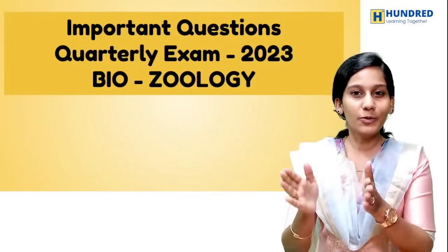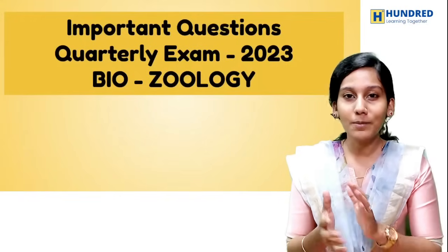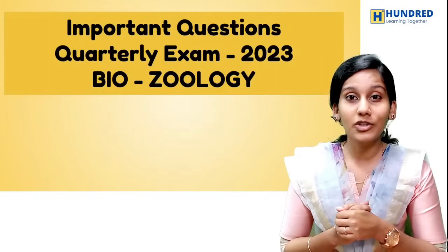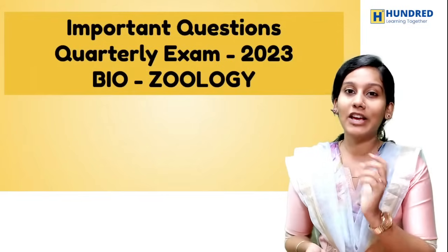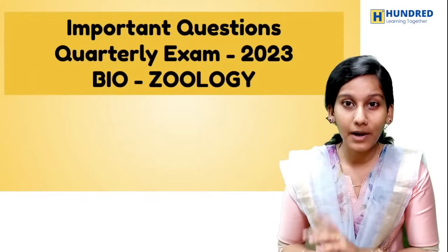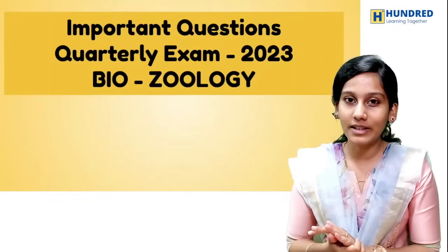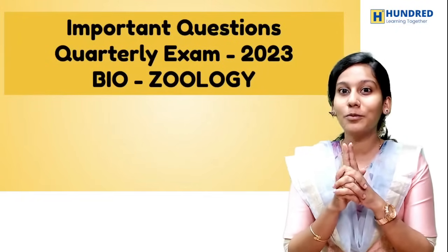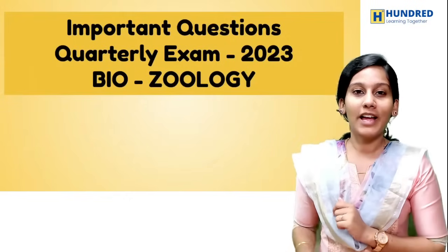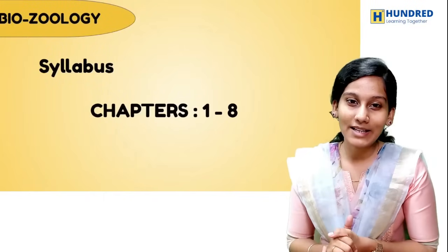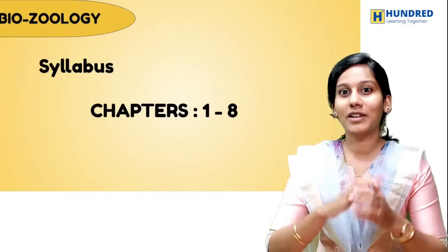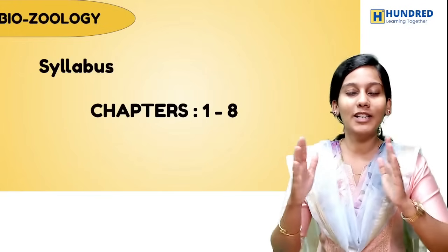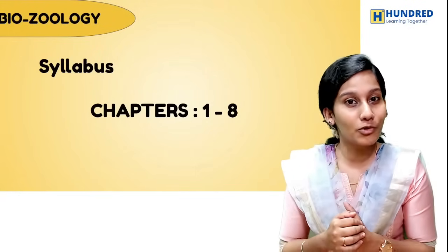We will expect a lot of questions in this reproduction unit. For example, chapter 1 you can expect a 2-mark question, and chapters 2 and 3 are definitely 5 marks. There are 1 to 8 chapters in the exam and we will cover all important chapters. We will complete 80% of the portions.